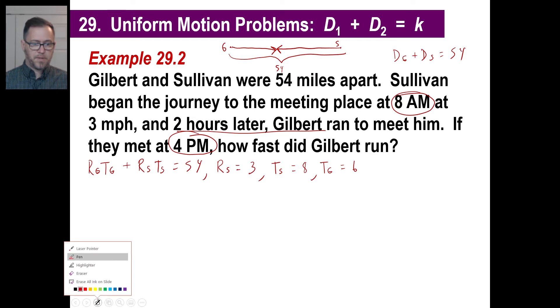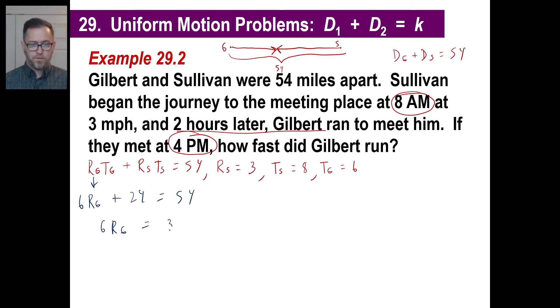Let's go ahead and slop that stuff in there. How fast did Gilbert run? We don't know. So the rate of Gilbert, the time of Gilbert is six. Six times R sub G plus the rate of Sullivan is three, the time of Sullivan is eight. Three times eight is 24 and that equals 54. So six times the rate of Gilbert, subtract 24 from 54, so the rate of Gilbert equals five. There we go. You got it. Piece of cake.